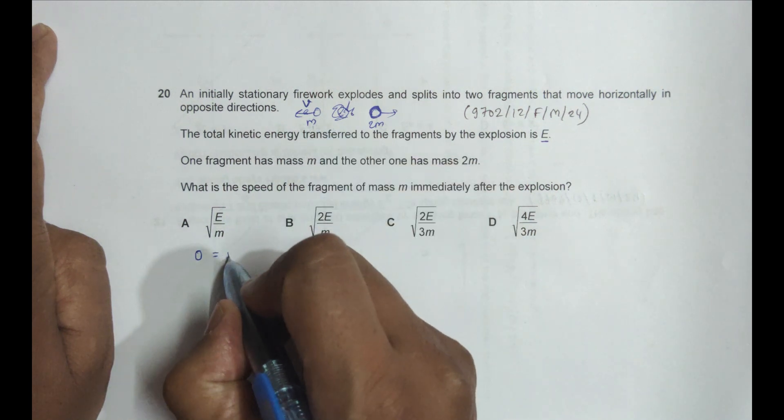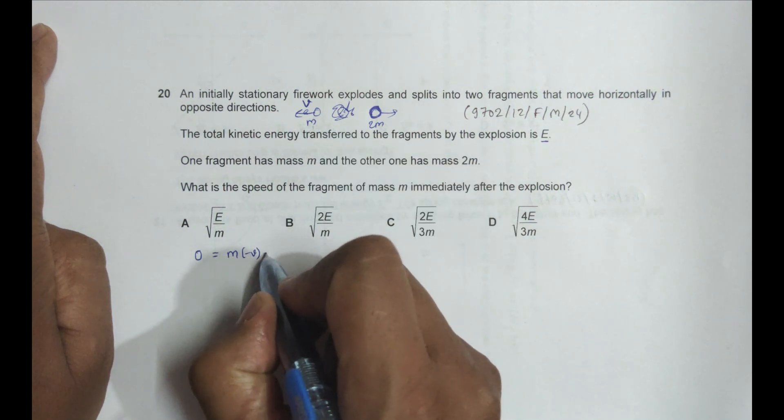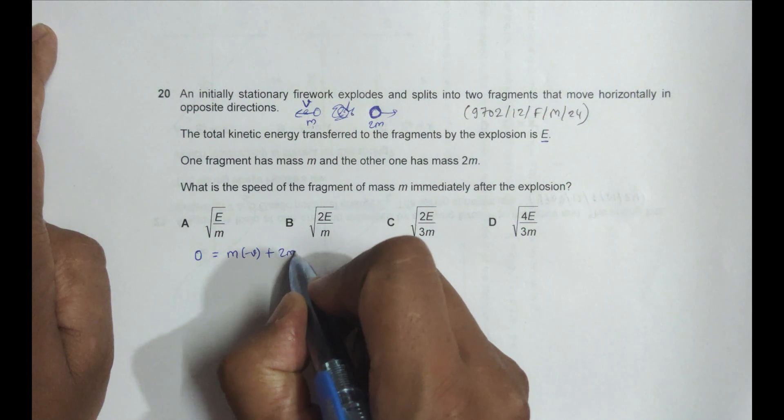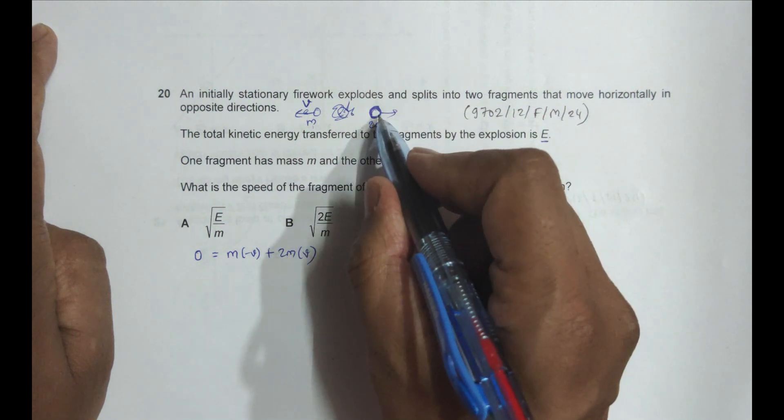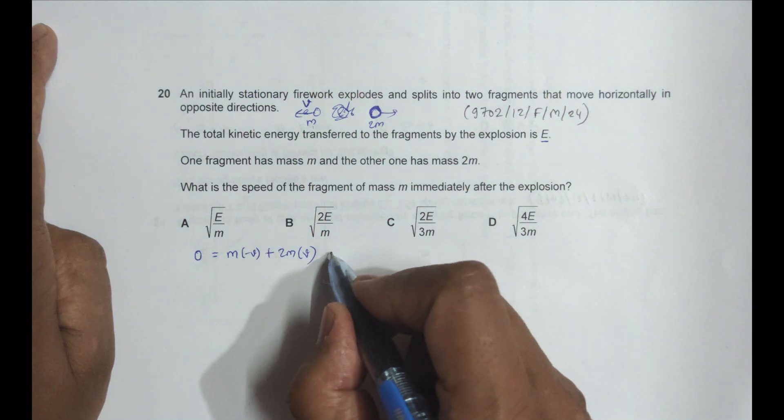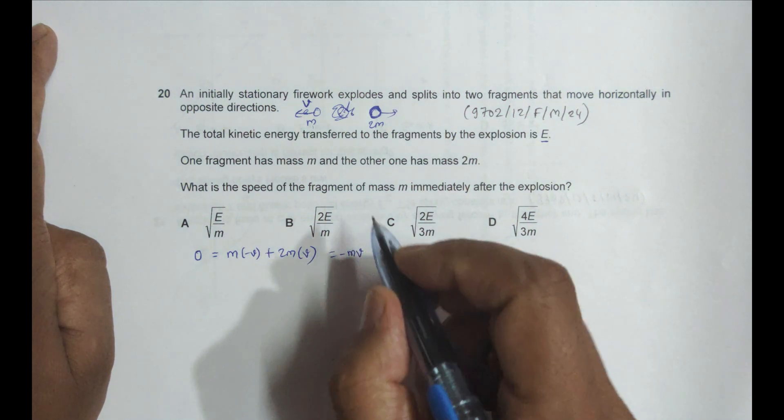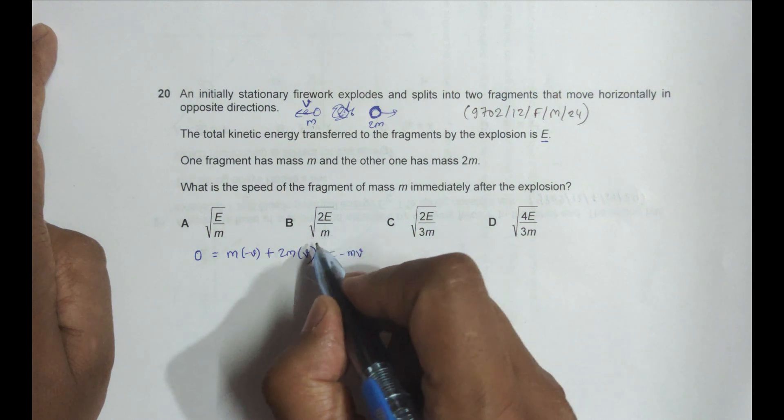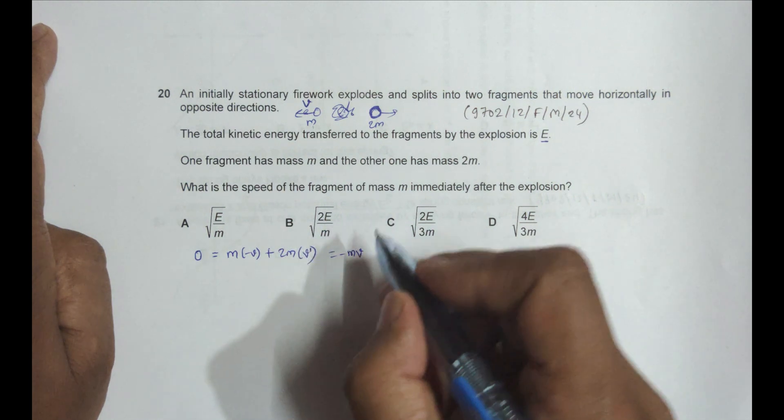This is M into -V plus this is 2M into V'. If I consider this as positive velocity, this should be negative velocity. So this gives us 0 = -MV plus 2MV'.